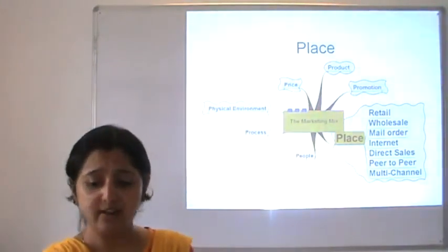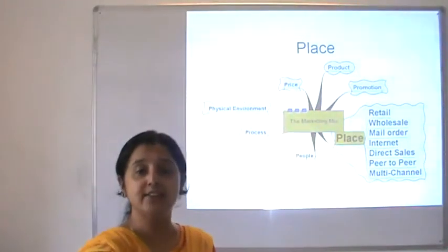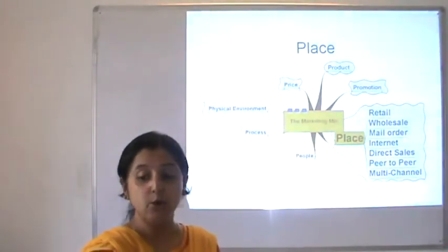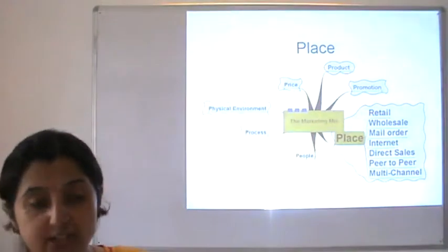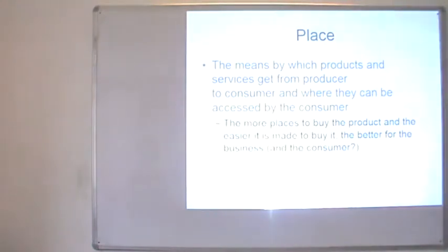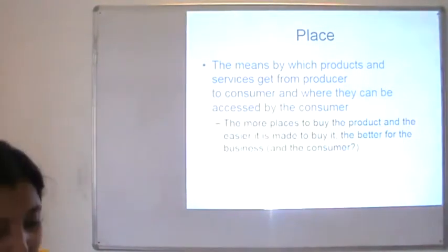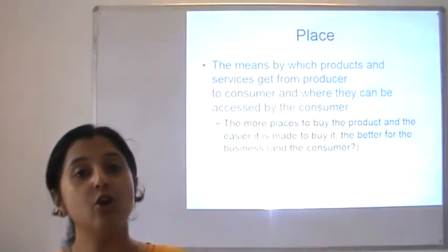In the traditional system, intermediaries exist — we need a retailer, a wholesaler, and door-to-door sellers to get your product available to end consumers. Place typically means a product or service has to get from the producer to the consumer so it can be used. The more places available for a consumer to buy, the easier it is for them to get access. The whole idea is to make the product available because if you are not available, your competitor will step in.